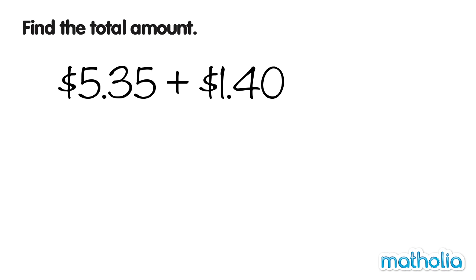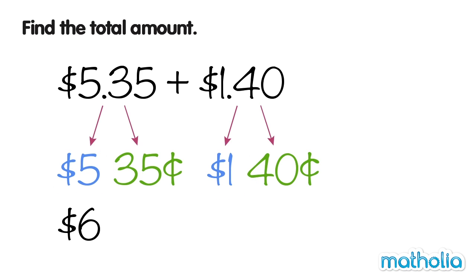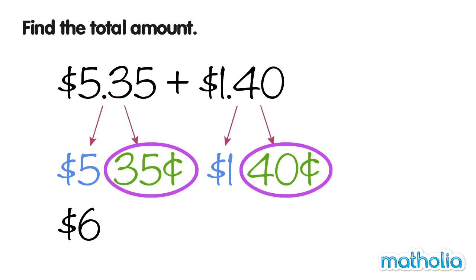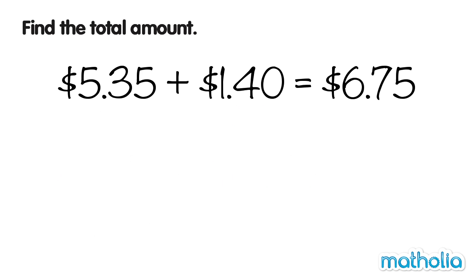Add $5.35 and $1.40. Separate into dollars and cents. Add the dollars: $5 plus $1 equals $6. Next, add the cents: $0.35 plus $0.40 equals $0.75. Now add $0.75 to $6. $6 add 75 cents is $6.75. So $5.35 plus $1.40 equals $6.75.